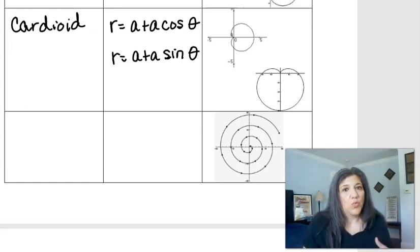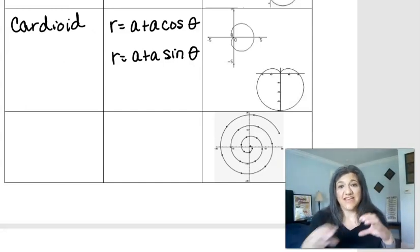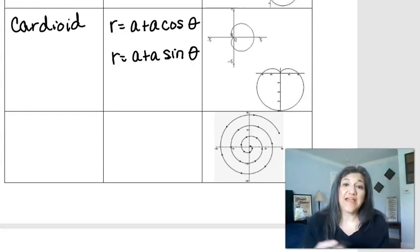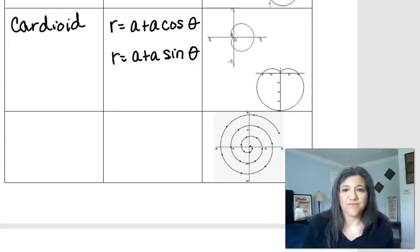And then r equals a plus a sine theta. Again, you could play around with what if you put a subtraction or what if you change it from sine to cosine, but the cardioid, the a and a are equal or a and b are equal.